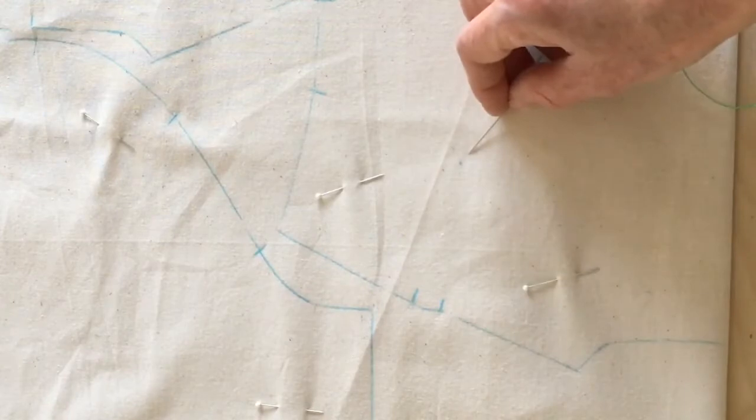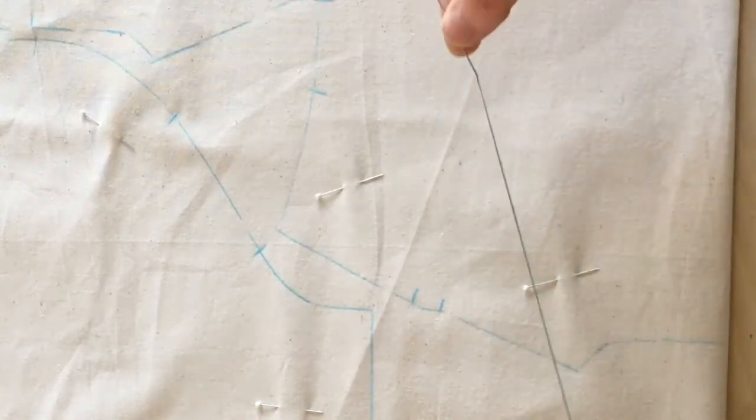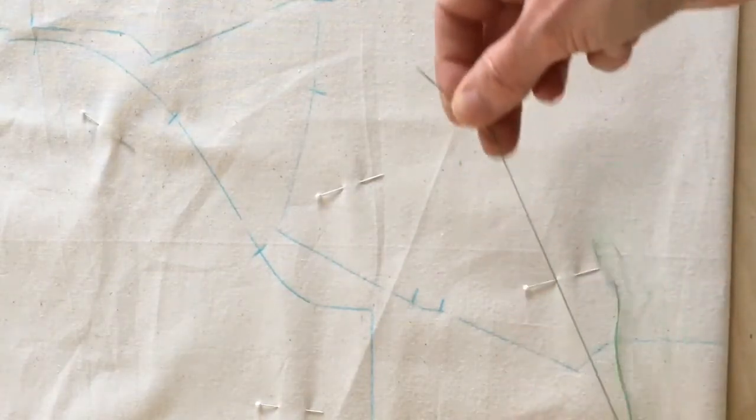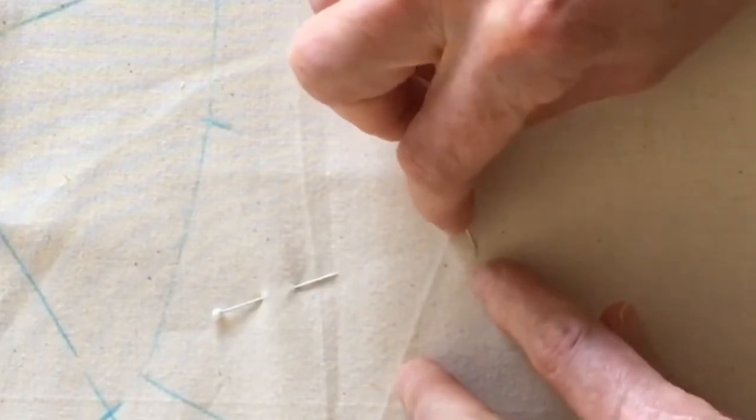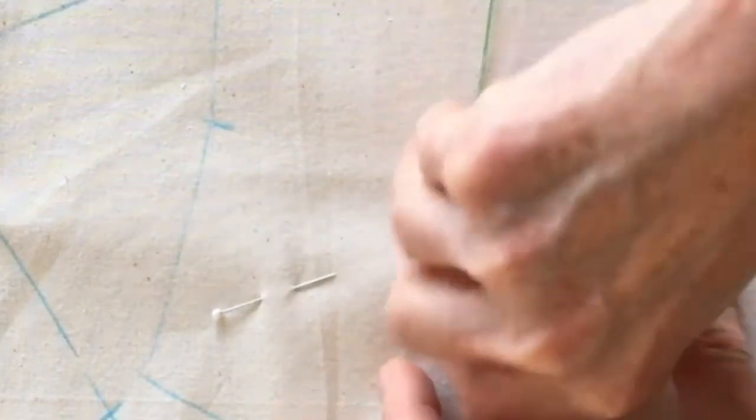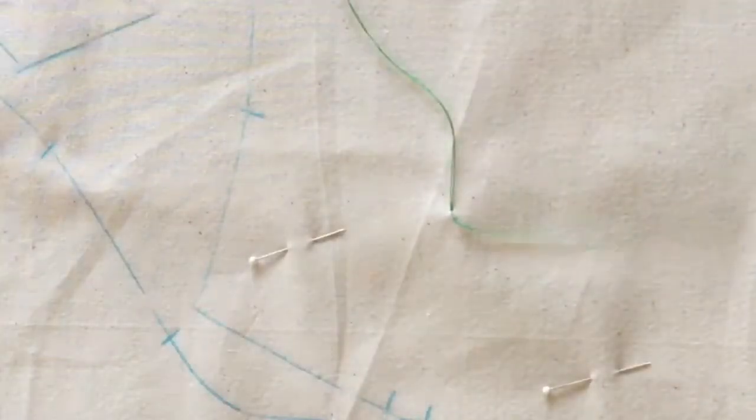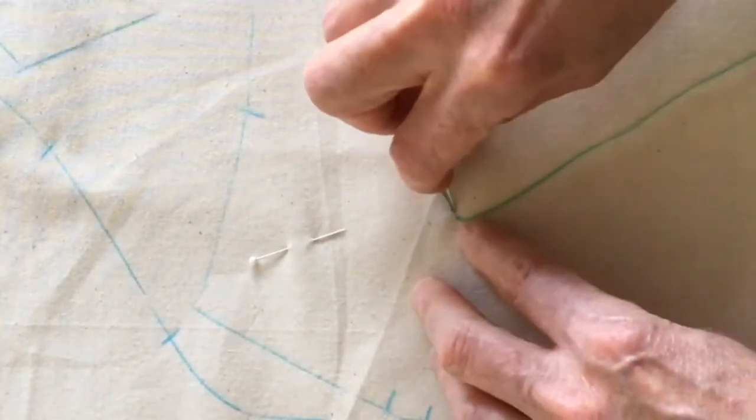In order to do a tailor's tack I've taken a double piece of thread and it's quite long, so I'm going to take a little stitch through the mark that I've made through both layers of the fabric and then leave a reasonably long leg on the thread. Then I'm going to stitch again a second time through that same area.